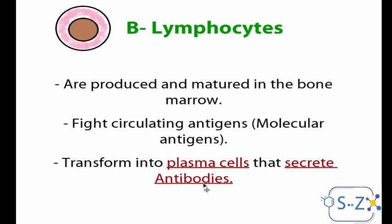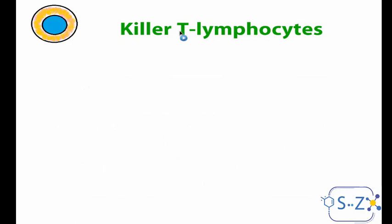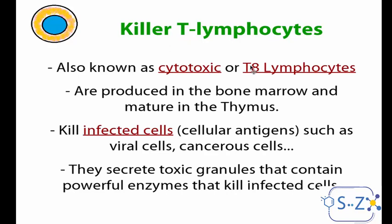The second type of lymphocyte is the killer T lymphocyte, also called cytotoxic T lymphocytes or T8 lymphocytes. They are produced in the bone marrow but mature in the thymus, where they learn what is self and non-self. These lymphocytes are responsible for killing infected cells — cellular antigens such as virus-infected cells, cancer cells, etc. They kill these cells by secreting toxic granules or substances.